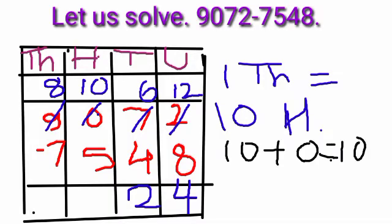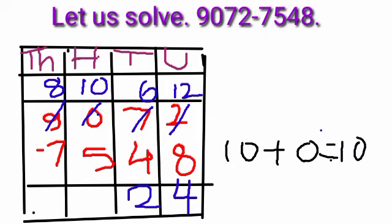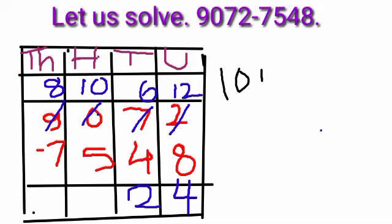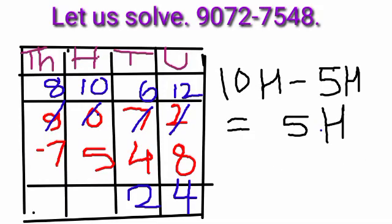10 hundreds plus 0 hundreds make 10 hundreds. 10 hundreds minus 5 hundreds is equal to 5 hundreds.